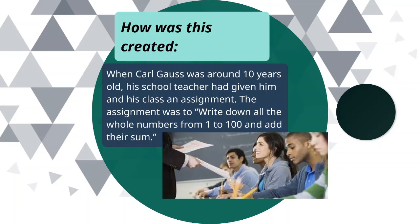When Carl Gauss was around 10 years old, his school teacher had given him and his class an assignment. The assignment was to write down all the whole numbers from 1 to 100 and add their sum.